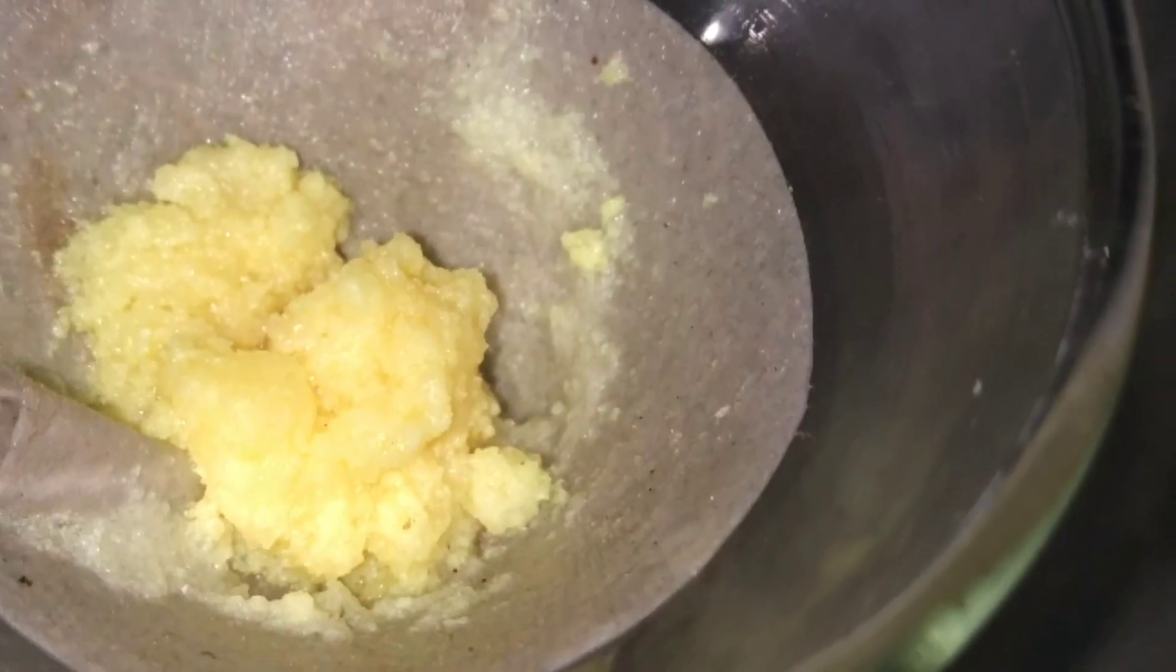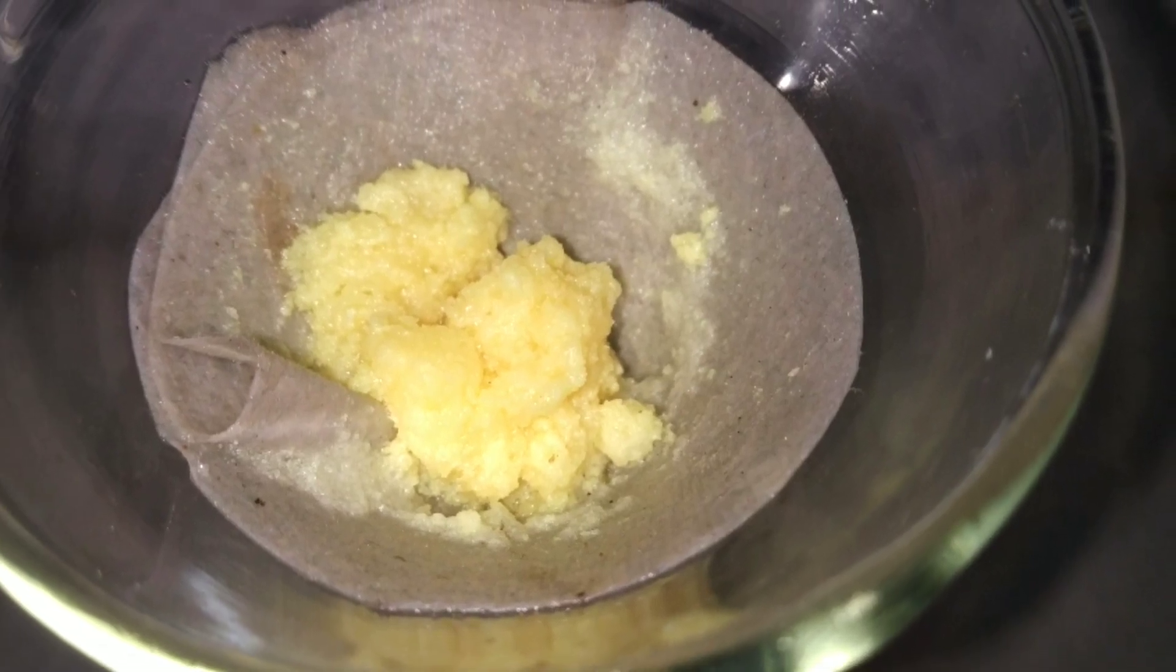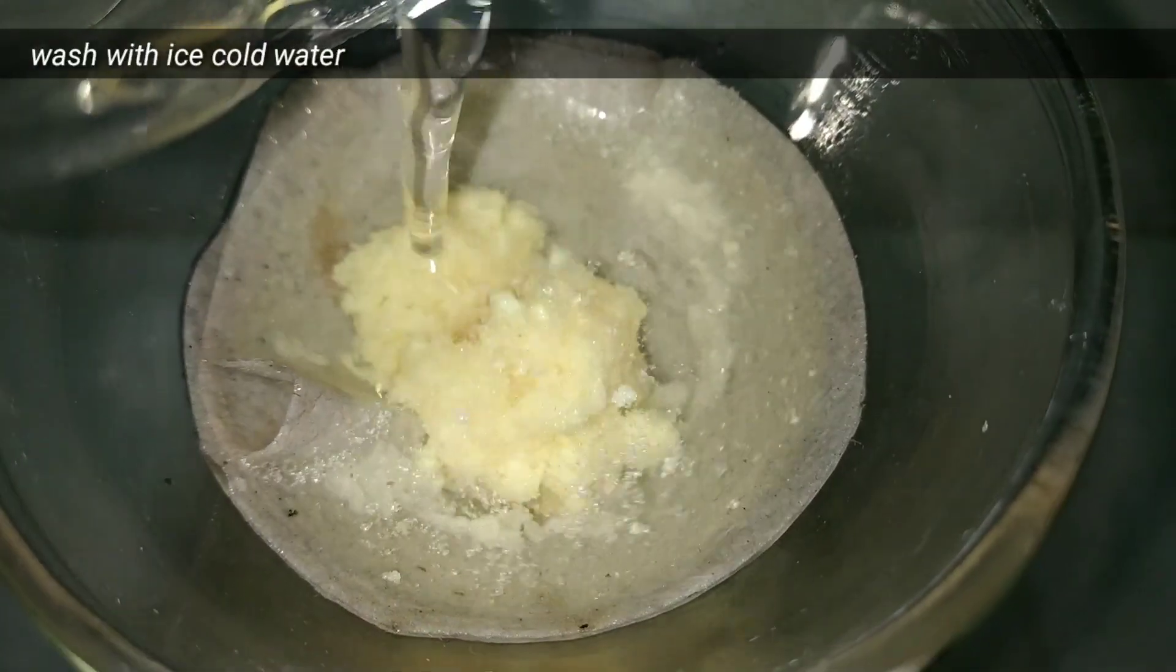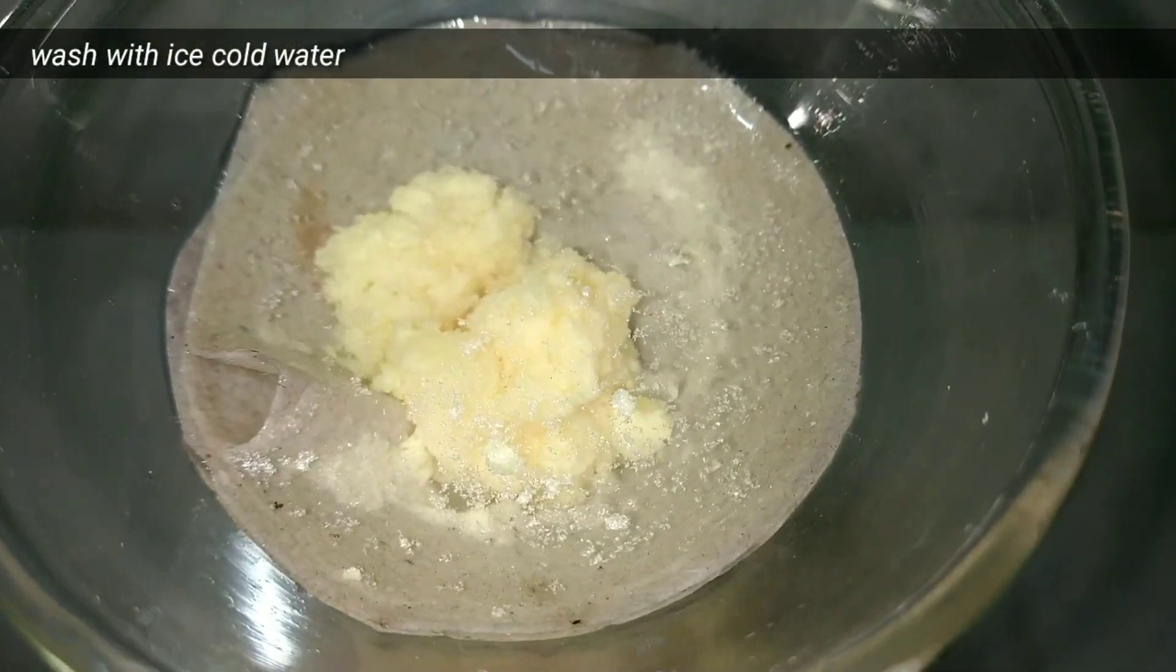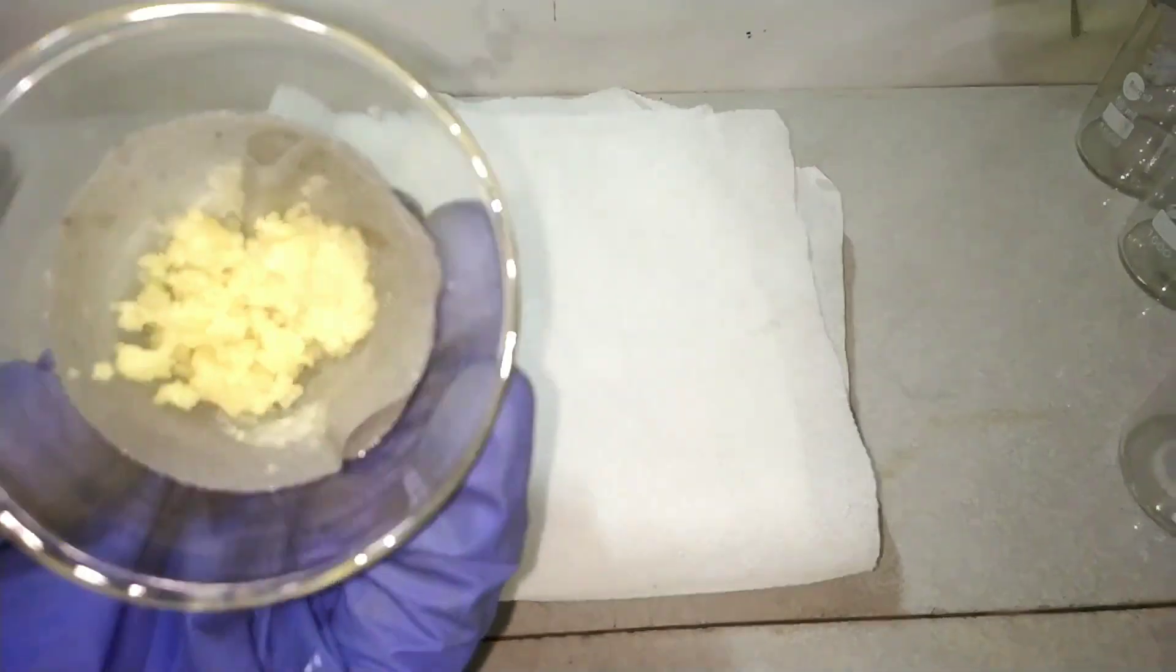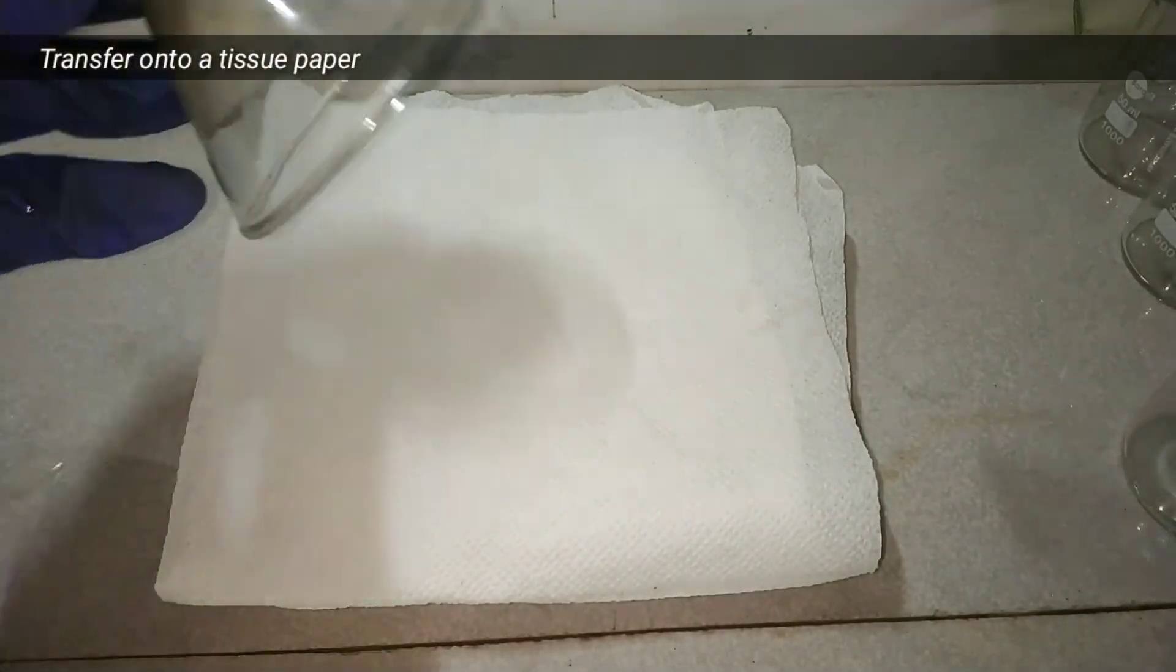The precipitated compound looks something like this. After that we wash this compound with ice cold water to remove much of its impurities that are unreacted compounds. Now we will transfer this onto a tissue paper in order to dry.